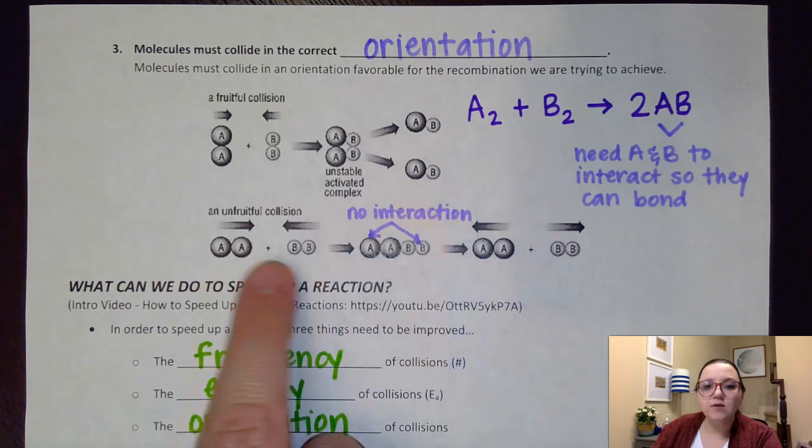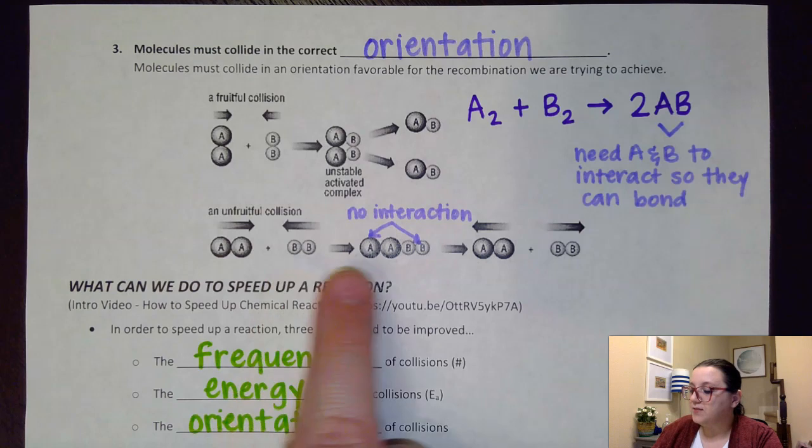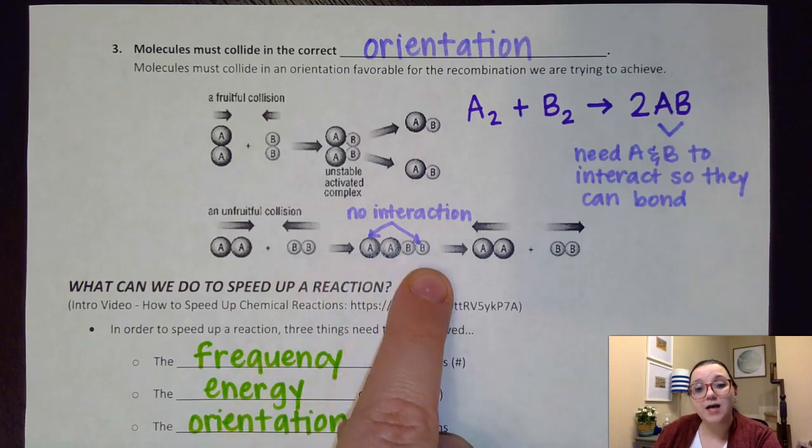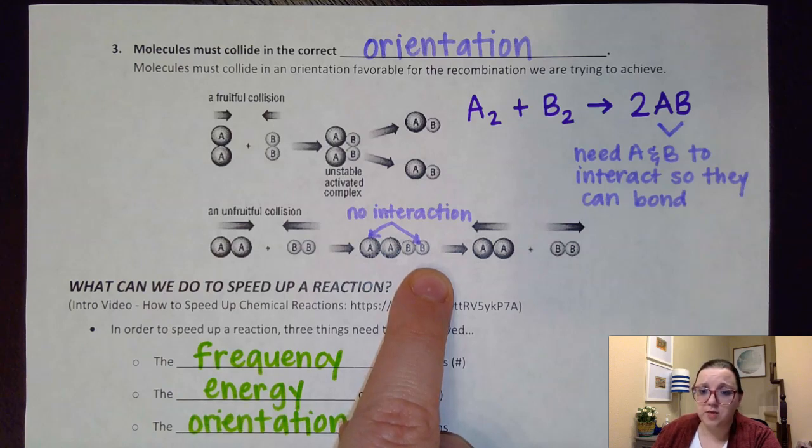However here, even if these are hitting with enough energy, the problem is that this exterior A and B on either side are not having any interaction with each other. And remember I need a bond to form between those.